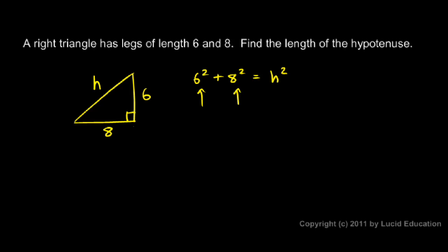Let's work out the squares here. Six squared is 36. Eight squared is 64. So 36 plus 64 is h squared. And 36 and 64 add up to 100. 100 is equal to h squared. And you should be able to see that if 100 is equal to h squared, then h is equal to 10, just the square root of 100.